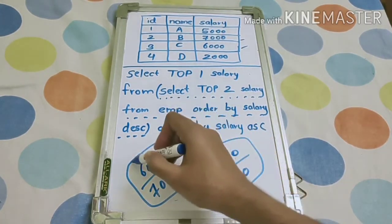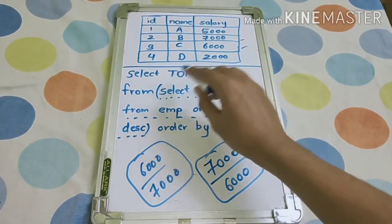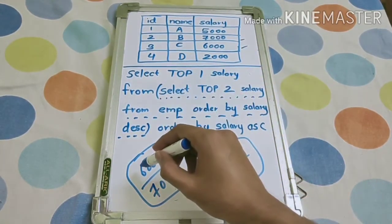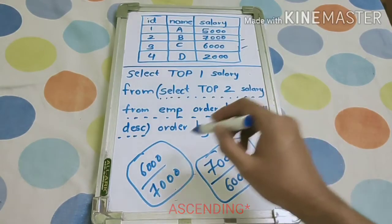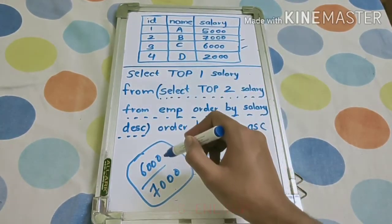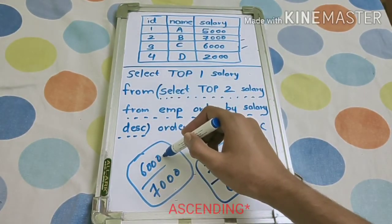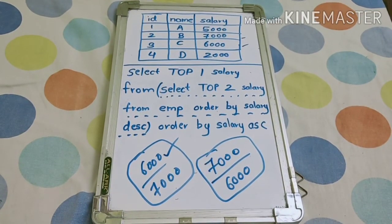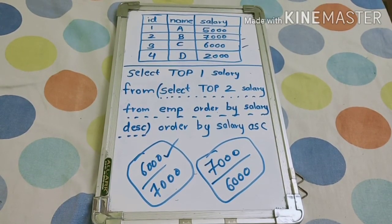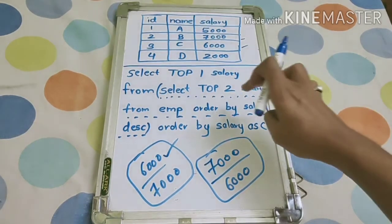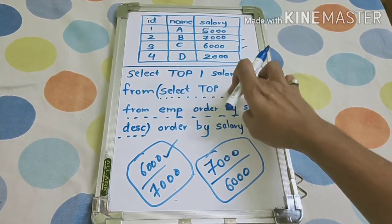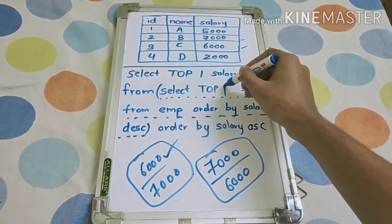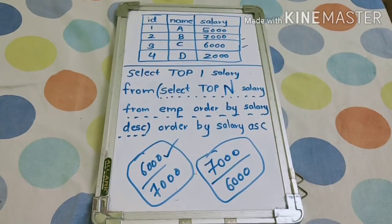So now if you consider whole query, then select top one from 6000, 7000. As you can see in table, the second highest salary is 6000. So in general, if you find any nth highest salary, just replace this two here with n, means as per the question you have to replace n with the number you have been asked.